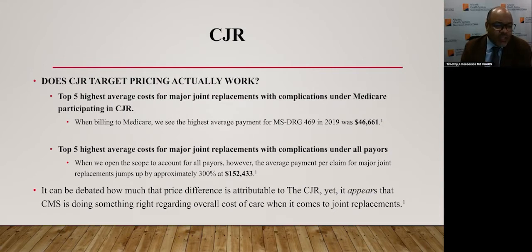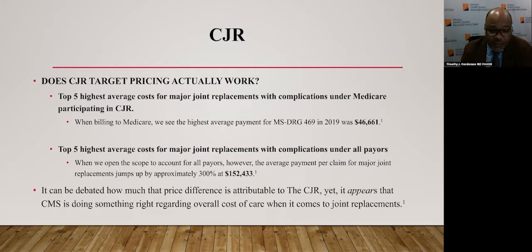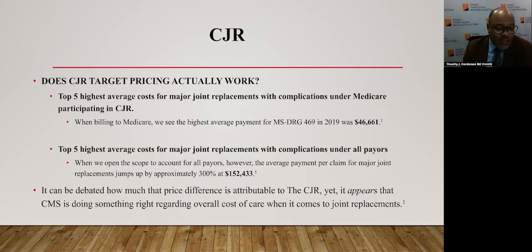The model tests whether bundled payment and quality measures associated with hip and knee replacements can incentivize hospitals, physicians, and post-acute care providers to work together to improve quality of care from initial hospitalization through recovery. Does CJR target pricing actually work? The top five highest average costs for major joint replacements with complications under Medicare participating in CJR were compared with hospitals not participating. The highest average payment for MS-DRG 469 in 2019 was $40,661. When the scope opens to all payers, the average payment per claim for major joint replacement jumps approximately 300% to $152,433, suggesting CMS is doing something right regarding overall cost of care for joint replacements.